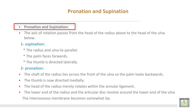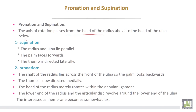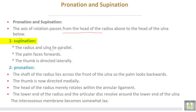For pronation and supination, the axis of rotation passes from the head of the radius above to the head of the ulna below. In supination, the radius and ulna lie parallel to each other; the palm of the hand faces forward and the thumb is directed laterally. In pronation, the shaft of the radius lies across the front of the ulna, so the palm faces backward and the thumb is directed medially. The head of the radius merely rotates within the annular ligament. The lower end of the radius and the articular disc revolve around the lower end of the ulna, and the interosseous membrane becomes somewhat lax.